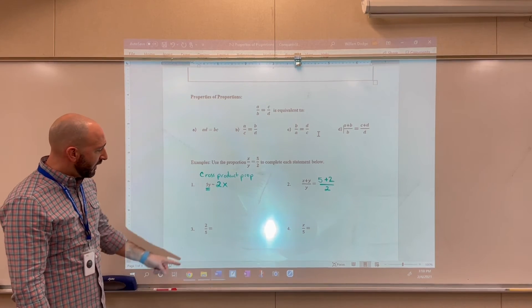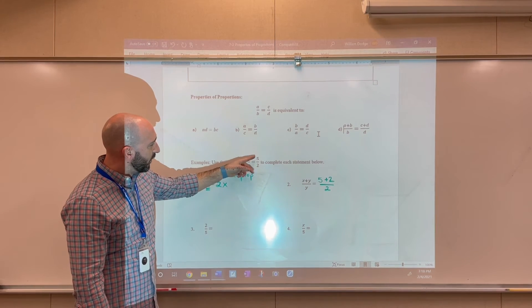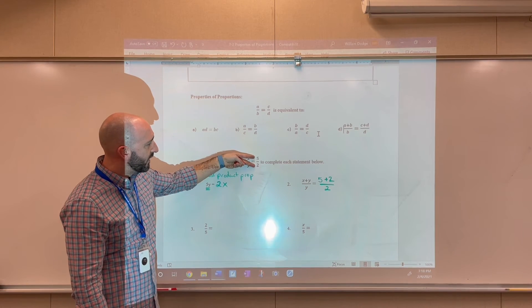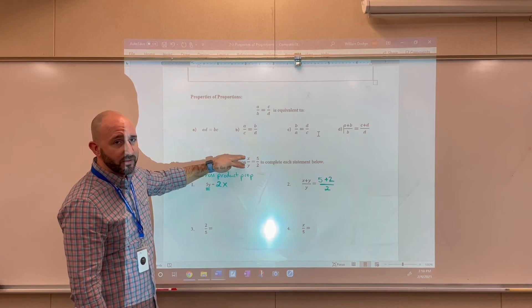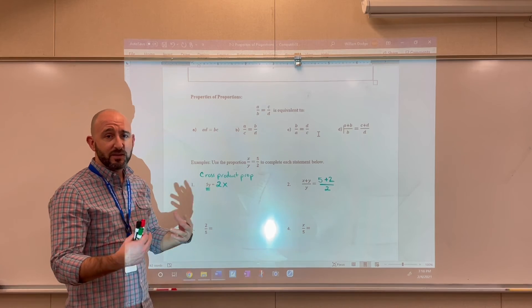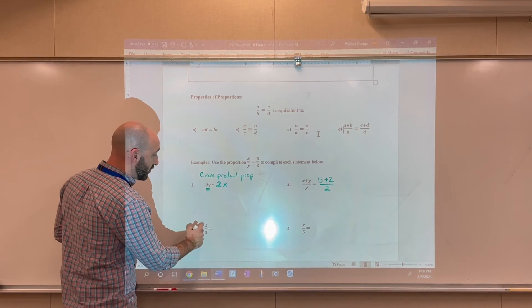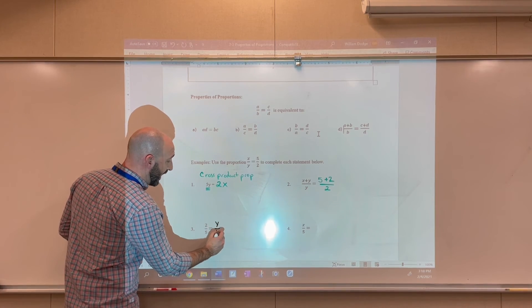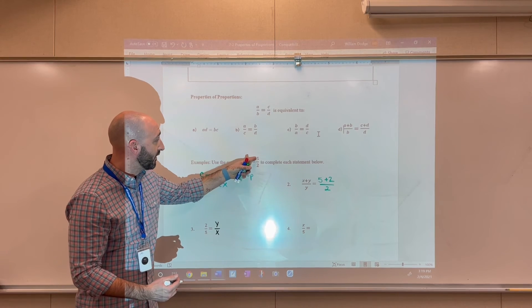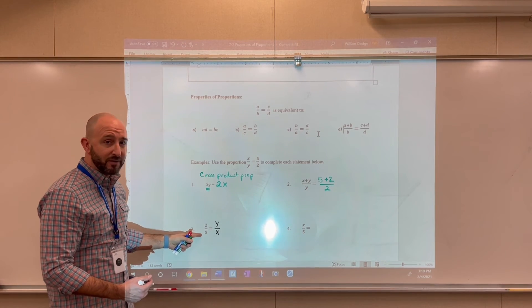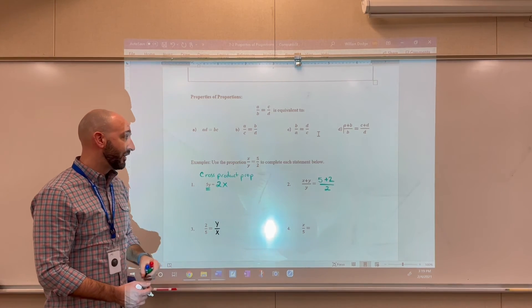The next one, we see 2 over 5. So I'm looking at the original equation, and it looks like what's happened here is we've taken the reciprocal of the right-hand side. So we can also do the same thing on the left-hand side, and that's going to maintain the balance in this equation. So 2 over 5 should be equal to y over x, which is taking the reciprocal of the left-hand side. So we've flipped 5 over 2 to get 2 over 5. To maintain the balance in this equation, we would have to flip the left-hand side as well.